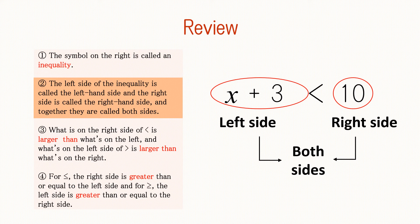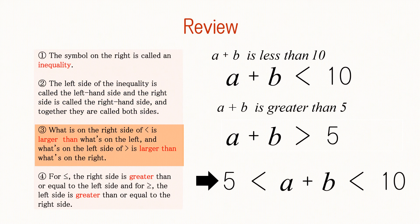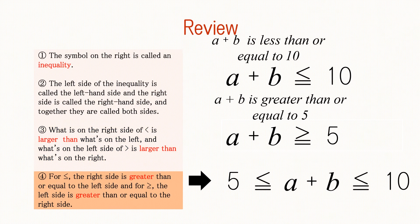The left side of an inequality is called the left-hand side, and the right side is called the right-hand side, and together they are called both sides. What is on the right side of the less than sign is larger than what's on the left, and what's on the left side of the greater than sign is larger than what's on the right. For the less than or equal to sign, the right side is greater than or equal to the left side, and for the greater than or equal to sign, the left side is greater than or equal to the right side.